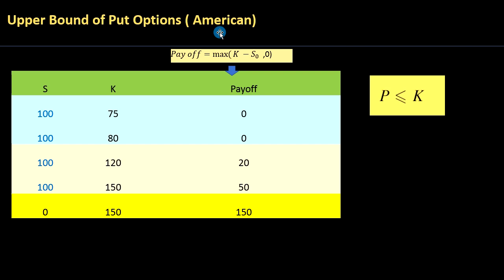A put option gives you the optionality to sell the underlying at a particular strike price. Let's assume you have a put option on a particular stock where the current stock price is $100 and the strike is $75.